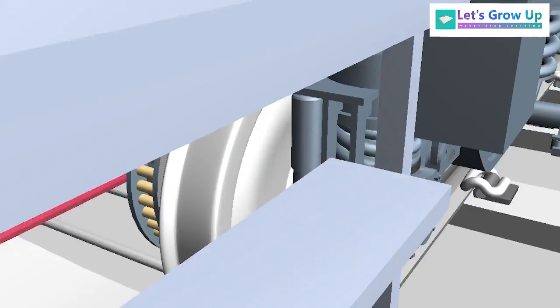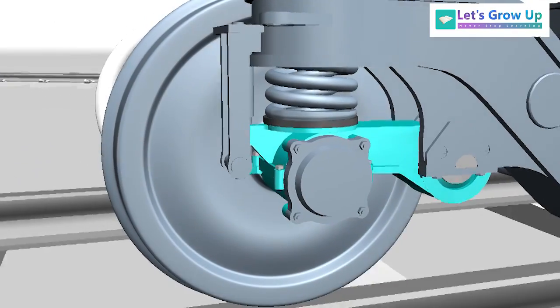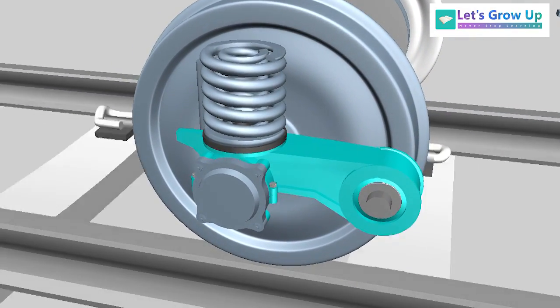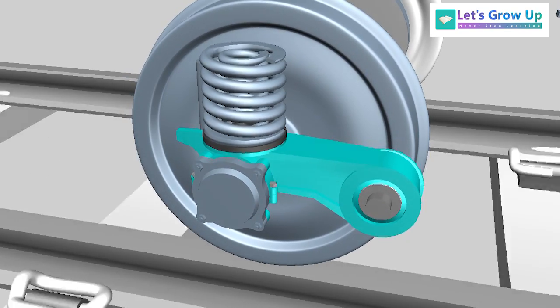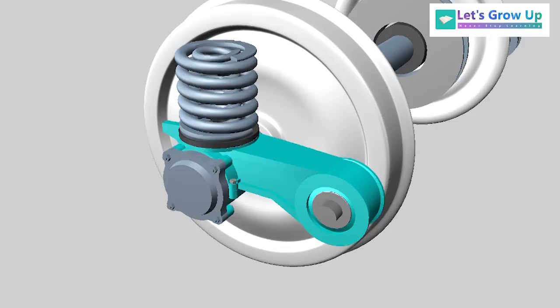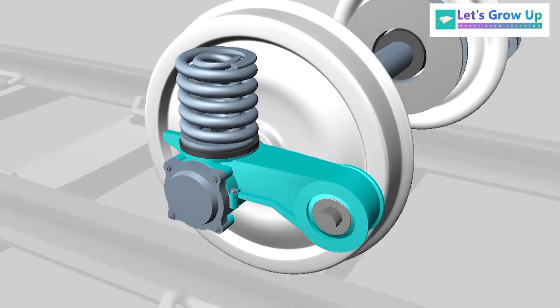I am trying to share it through this animation. When a train is running, the primary springs maintain the vibration and provide a smooth journey. During this process, the control arm provides flexible movement with the primary spring.